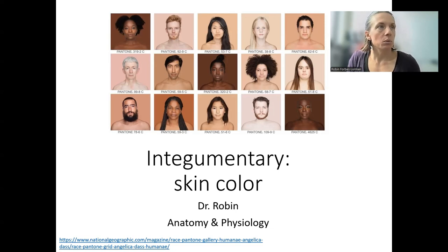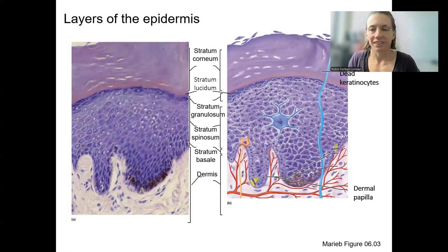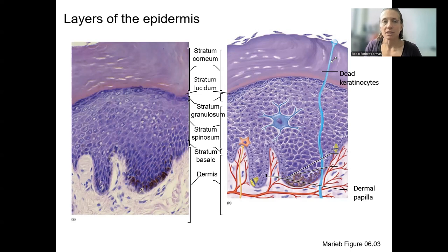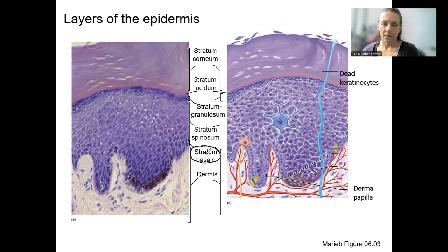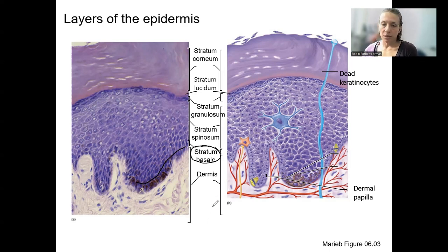To remind you of the layers of the skin, let's look at the epidermis. The epidermis is that top layer of the skin made of stratified squamous epithelium. The bottom layer of that is the stratum basale — a single layer of cells just above the dermis. This is where mitosis is going on to allow the skin to grow and regenerate. This is also the layer where there are melanocytes. Here is a melanocyte, and most of what you see here is melanin. Melanin is the pigment.